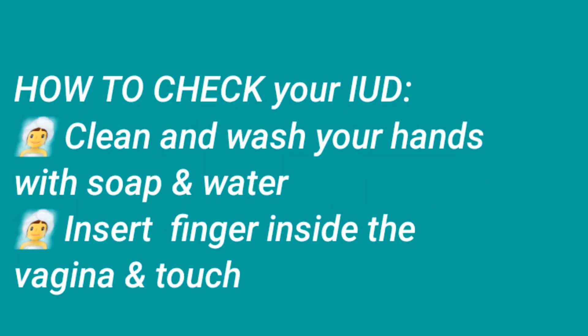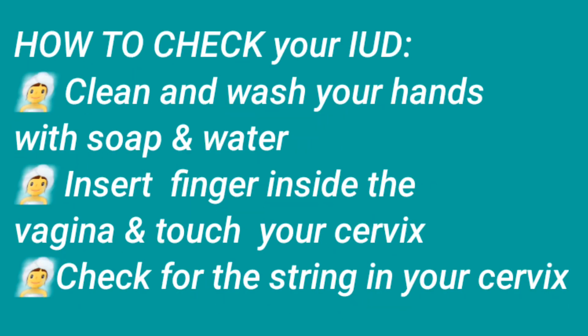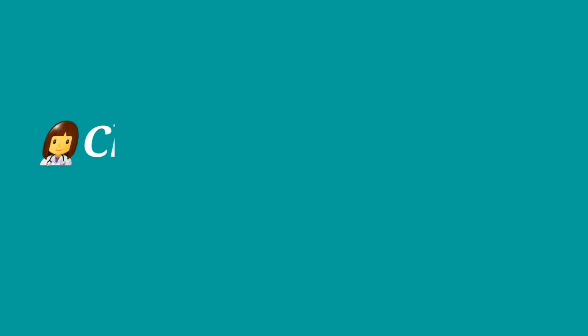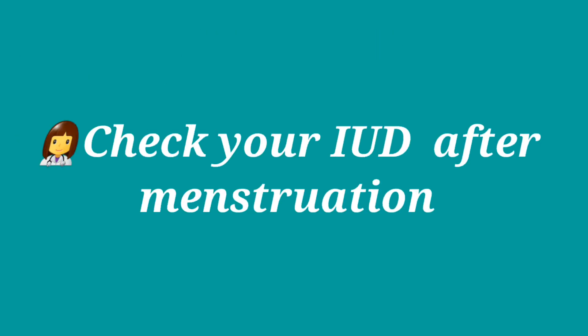How to check your IUD: clean and wash your hands with soap and water, insert your index finger inside the vagina and touch your cervix, then check for the string in your cervix. Check your IUD every after menstruation.